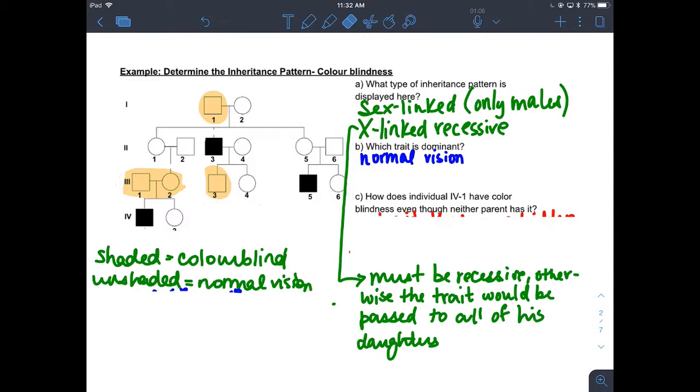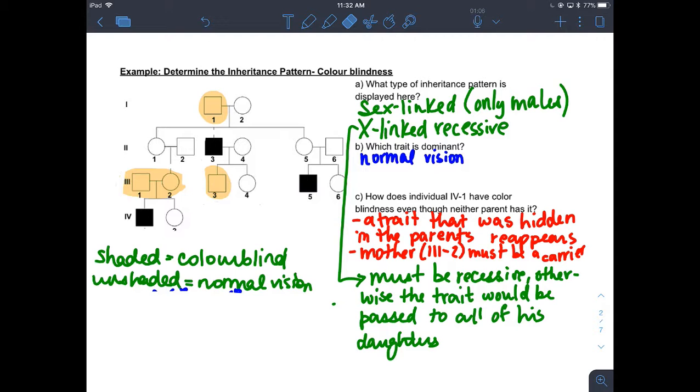Which trait is dominant? In this example, we're looking at colorblindness. So normal vision would be dominant. And how does individual IV-1 have colorblindness even though neither parent has it? Well, we know that that trait was hidden because we determined that it was recessive. So parent or generation three, parent two or person two, they carried the gene that was passed on from their parents and their grandparents, but they were a carrier. It's a recessive trait. As long as they only have one of those genes or they're heterozygous for it, they won't necessarily have that trait.